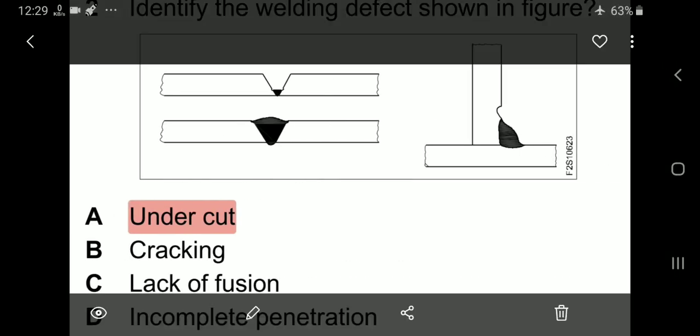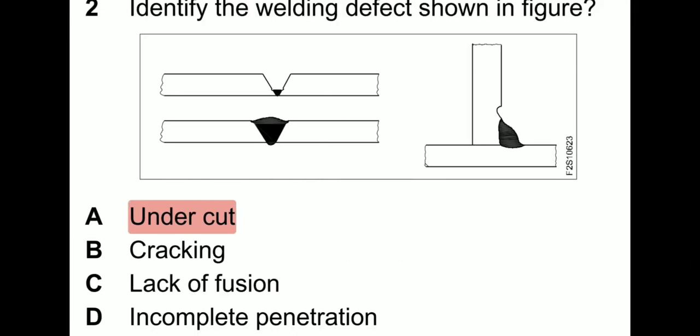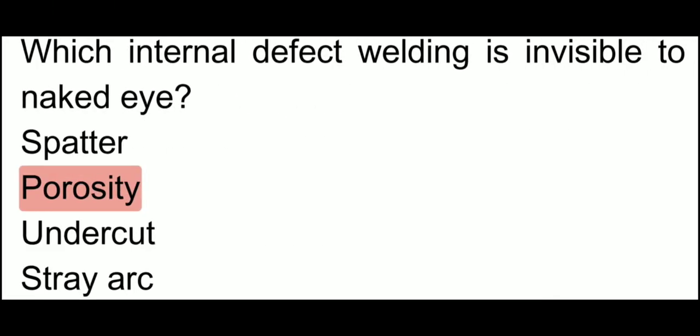Next, identify the welding defect shown in figure. Here the welding defect that is being shown — what is the undercut?